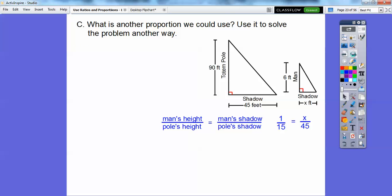So how about this, you guys? If we did the man's height over the man's shadow, okay, the man's height over the man's shadow would equal 6 over x. And then if we set that equal to, we've got to keep it consistent. If we do the man's height over the shadow, then we've got to do the height over the shadow. So the pole's height over the pole's shadow. So the pole's height is 90 and the pole's shadow is 45, okay? So here we go.